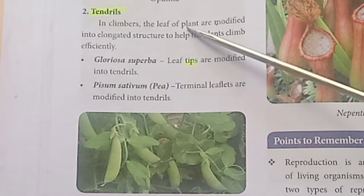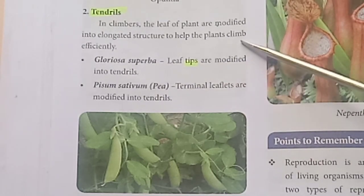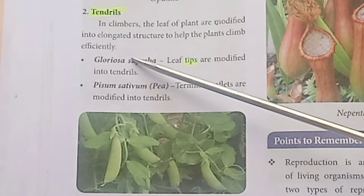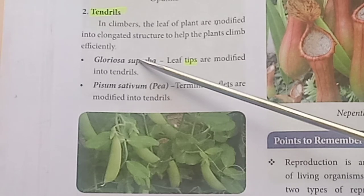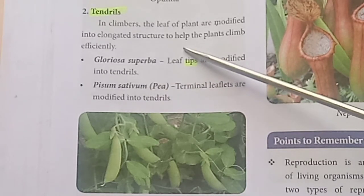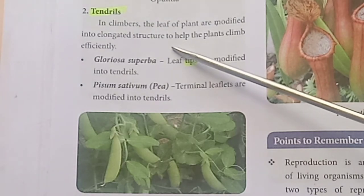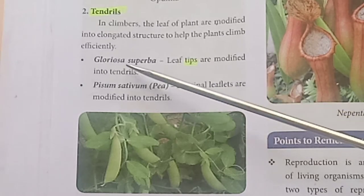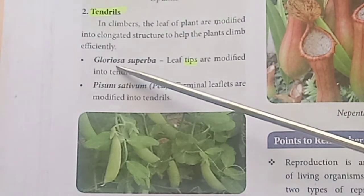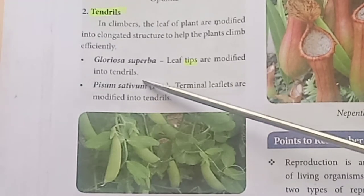In climbers, the leaves of plants are modified into elongated structures to help the plants climb efficiently. In Gloriosa superba, the leaf tips are modified into tendrils.